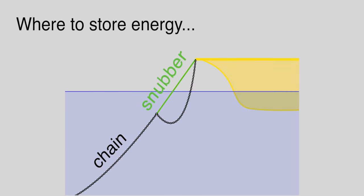Part of the energy can be stored in the anchor chain. The higher the chain rises above the seabed, the more energy will be stored. In physics, this is called potential energy.